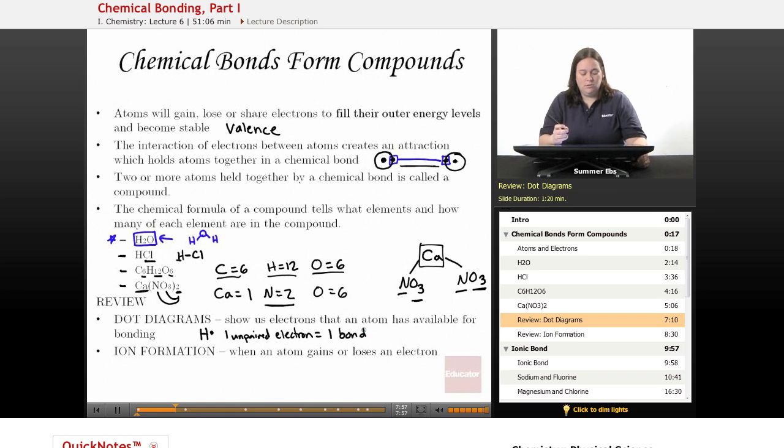Something a little bit more difficult or a little bit able to bond more would have more unpaired electrons, something like carbon. Carbon's dot diagram looks like this with 4 unpaired electrons. 4 unpaired electrons means that carbon can make 4 bonds. We can tell what electrons are available for bonding by making the dot diagram. And the dot diagram is a diagram of what the outermost energy level of electrons looks like.